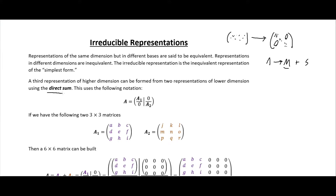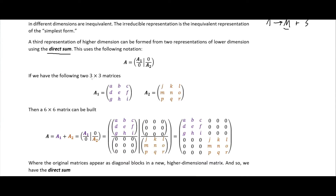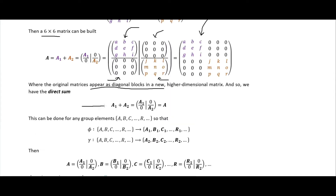The direct sum is essentially: if we have matrices, we arrange them each into the diagonals of a larger dimensional matrix. For instance, if we have two 3×3 matrices, the direct sum would give us a 6×6 matrix where one is in one diagonal block and the other is in the other diagonal block, with the off-diagonals all being zeros. So the original matrices appear as diagonal blocks in a new higher-dimensional matrix — that is the direct sum.